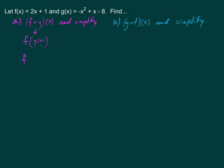g of x is the same thing as negative x squared plus x minus 8. So now we have f and x's. It looks like f of x equals 2x plus 1. So if this x gets replaced with something, this x will also get replaced with that same thing. Whatever is in the parentheses here will get multiplied by 2 and then have 1 added to it. So this will be 2 times negative x squared plus x minus 8, plus 1.